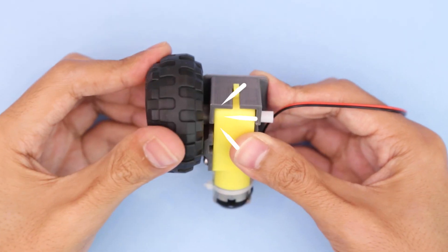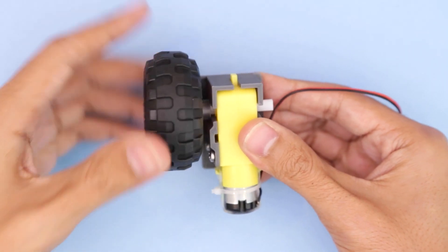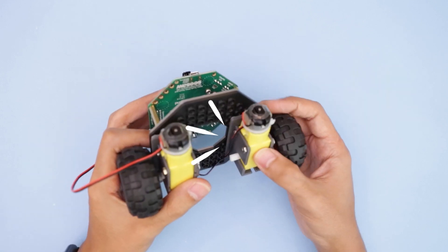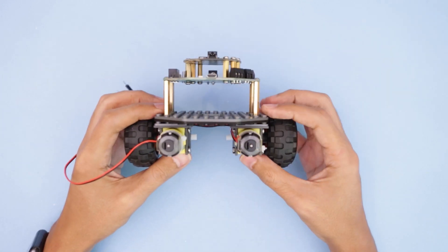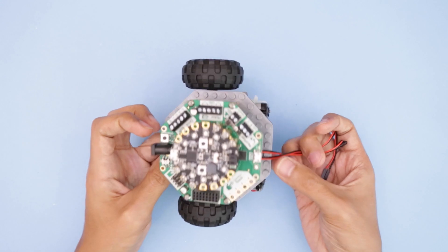The two motors can then be attached to the bottom of the Lego base plate. To keep our wires nice and neat, you can route them through the opening in the center.